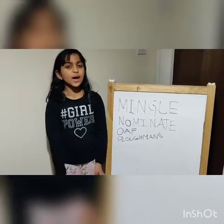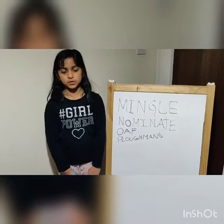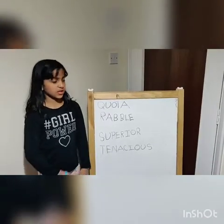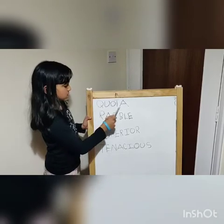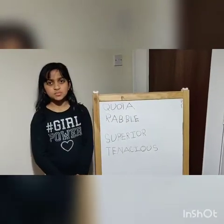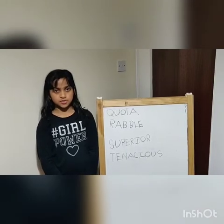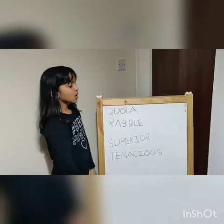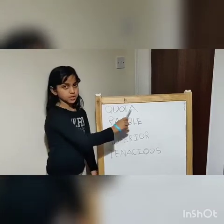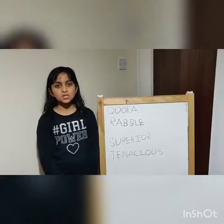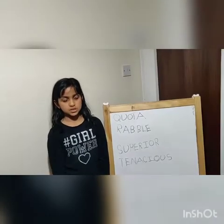There are no antonyms or synonyms for ploughmans because it is a type of food. The next word we are learning is quota, Q-U-O-T-A. Quota means a fixed amount or share of something. An example sentence for quota is: our class already has a quota of books.